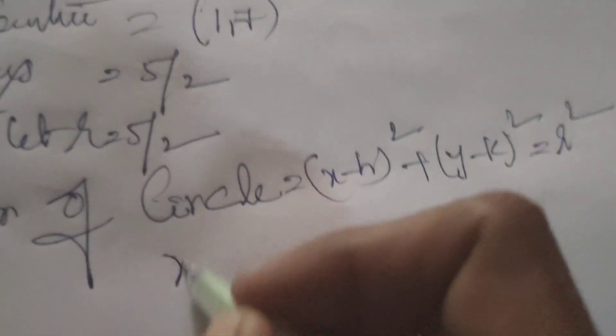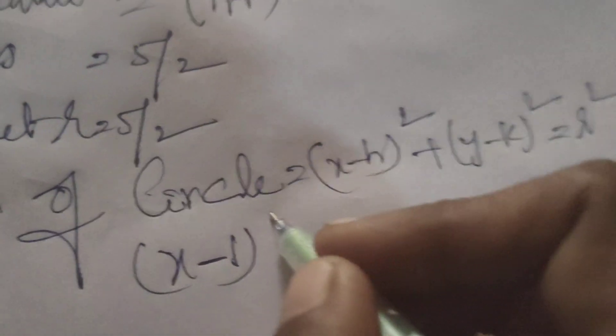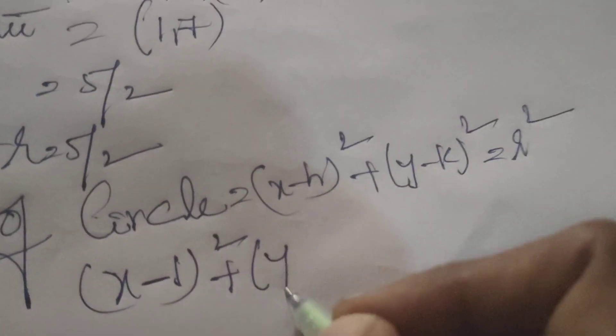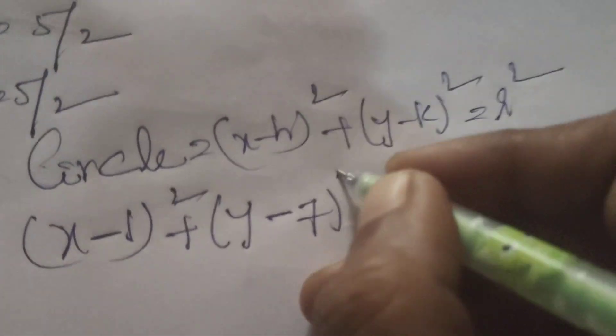Now substitute in these values: x minus 1 whole square plus y minus 7 whole square equals to 5/2 whole square.